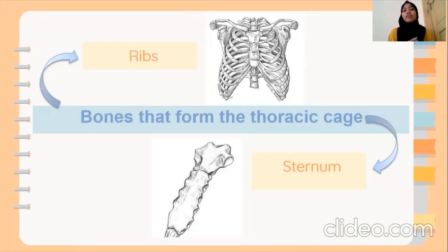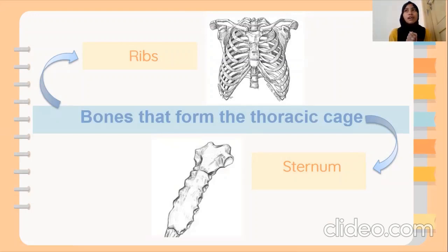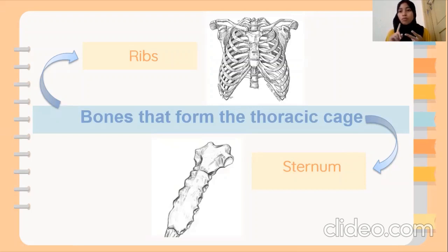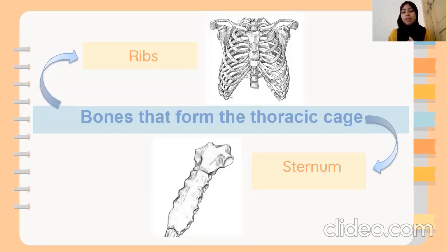These are the bones that are from the thoracic cage, which are ribs and also the sternum. In humans, there are normally about 12 pairs of ribs, and they are divided into two types: false ribs and true ribs. For your information, these ribs and the sternum are also categorized as the same type, which is a flat bone.